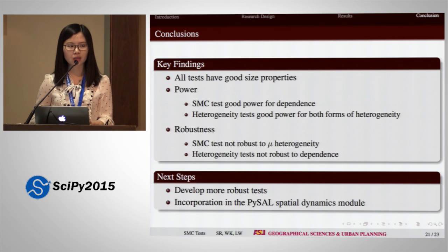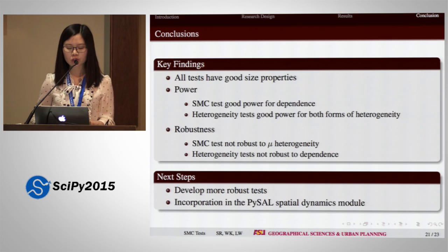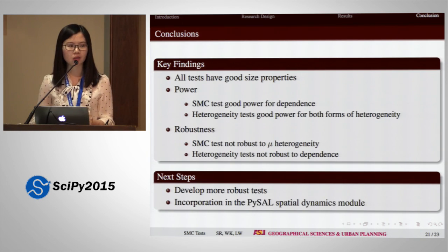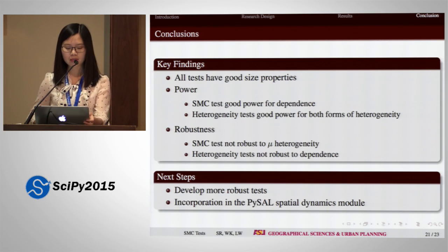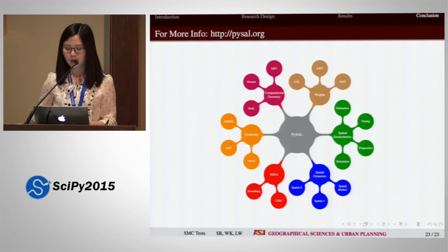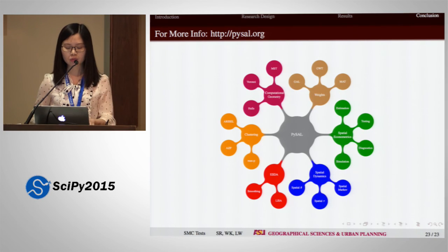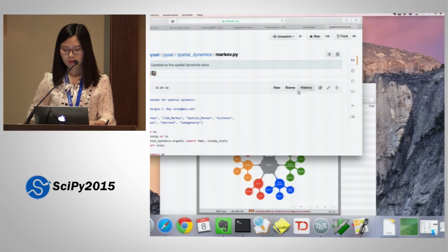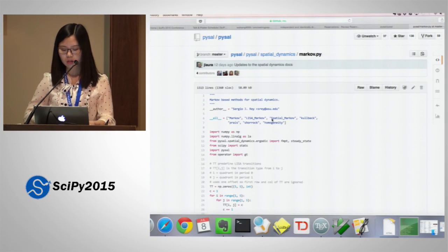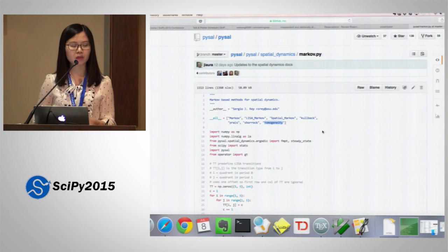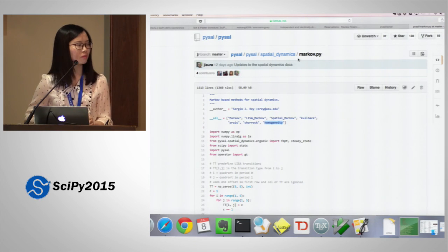In conclusion, by using spatial dependence and spatial heterogeneity tests in combination, we can identify lag heterogeneity, but we cannot clearly distinguish spatial dependence from mean heterogeneity because the test for one alternative is not robust to the other. Our next steps are to develop more robust tests and incorporate them into the spatial dynamics module in PySAL. Spatial Markov and both tests for spatial dependence and spatial heterogeneity have already been implemented in the spatial dynamics module in PySAL. Thank you for your attention.